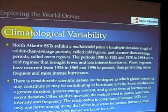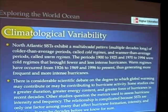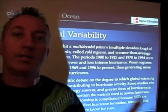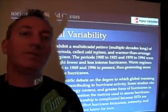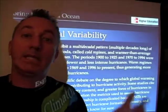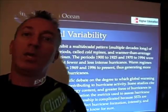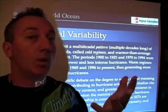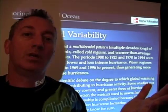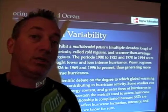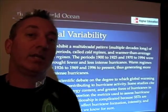North Atlantic sea surface temperatures, as it says here, have colder than average periods that we call cold regimes, and warmer than average periods that we call warm regimes. These cold and warm cycles change over periods of decades, what we call a multi-decadal cycle. When the North Atlantic Ocean is warmer than usual, we're going to get more hurricanes; when it's colder than usual, we're going to get fewer hurricanes.